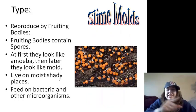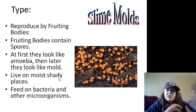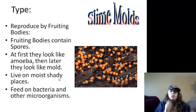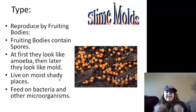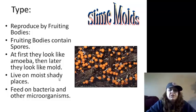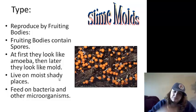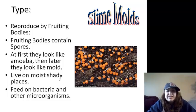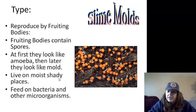Slime molds are really neat because they have fruiting bodies, which contain the spores. These fruiting bodies can burst, and the wind, water, or another organism will carry the spores to a new place where they attach and reform. They first look like amoebas and then look like molds — they have many different stages in their life. They live in moist, shady places and feed on bacteria and other microorganisms.